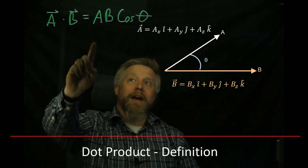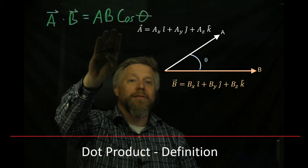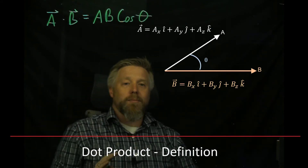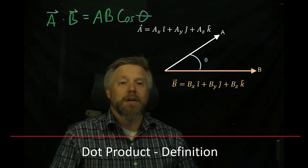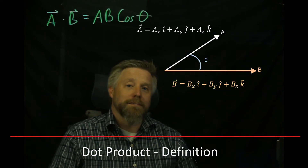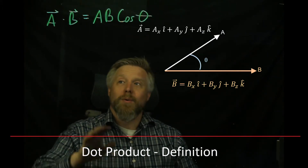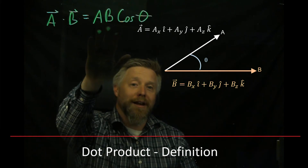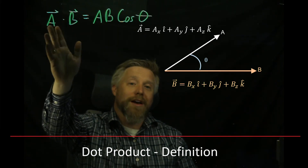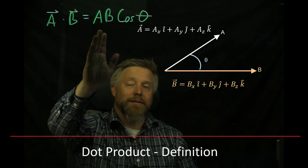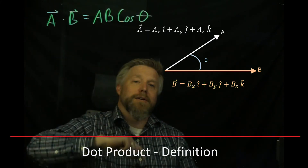You'll notice there are no vector symbols on the right-hand side — you get a scalar out of the dot product. In fact, it's often called the scalar product. This is the only time you'll have an equation with vectors on one side and scalars on the other, because the dot product of two vectors can equal a scalar.